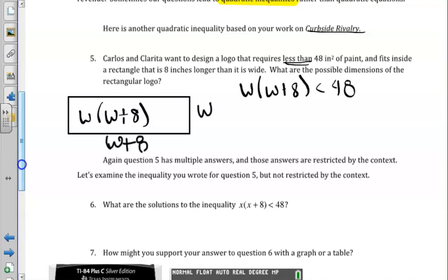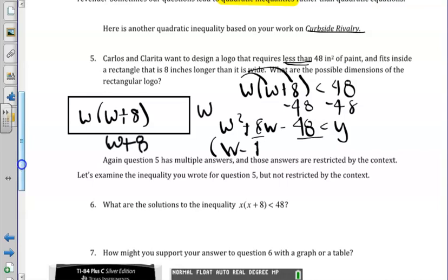We still need to solve this. So let's use our method to solving and figure out what our range of values will be. If I bring the 48 to the other side and I distribute the w, I should get w squared plus 8w minus 48 is less than, and that will be a 0 or a y. So there's my inequality. Now we're going to do the same thing we did when we solved. We find two numbers that multiply to negative 48 and add to 8. Those two numbers are negative 4 and 12.